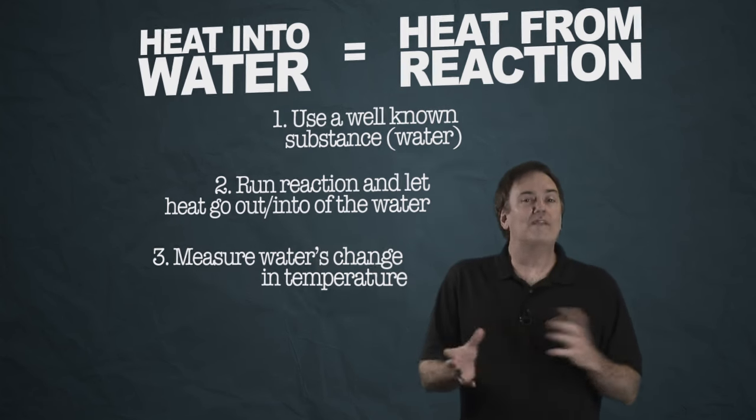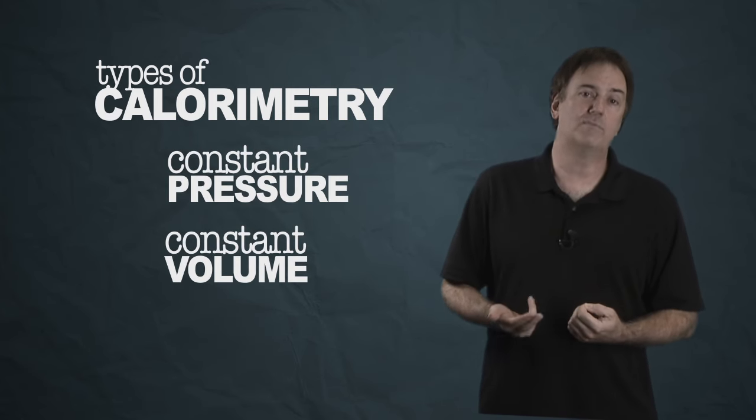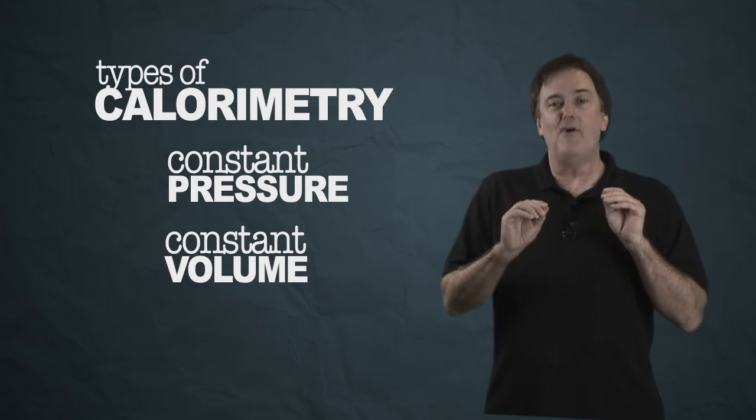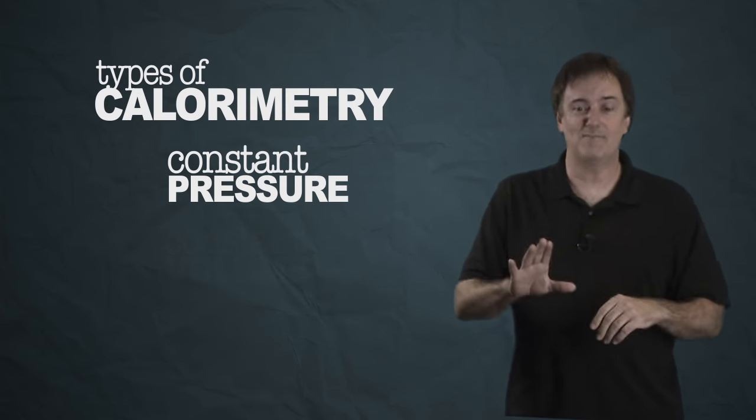Now it does require a little bit of planning ahead. You have to build yourself a calorimeter. We have two types of calorimetry: constant pressure and constant volume calorimetry. I'll start with the easy one. Constant pressure is the easy one. We'll get to the volume in a minute.